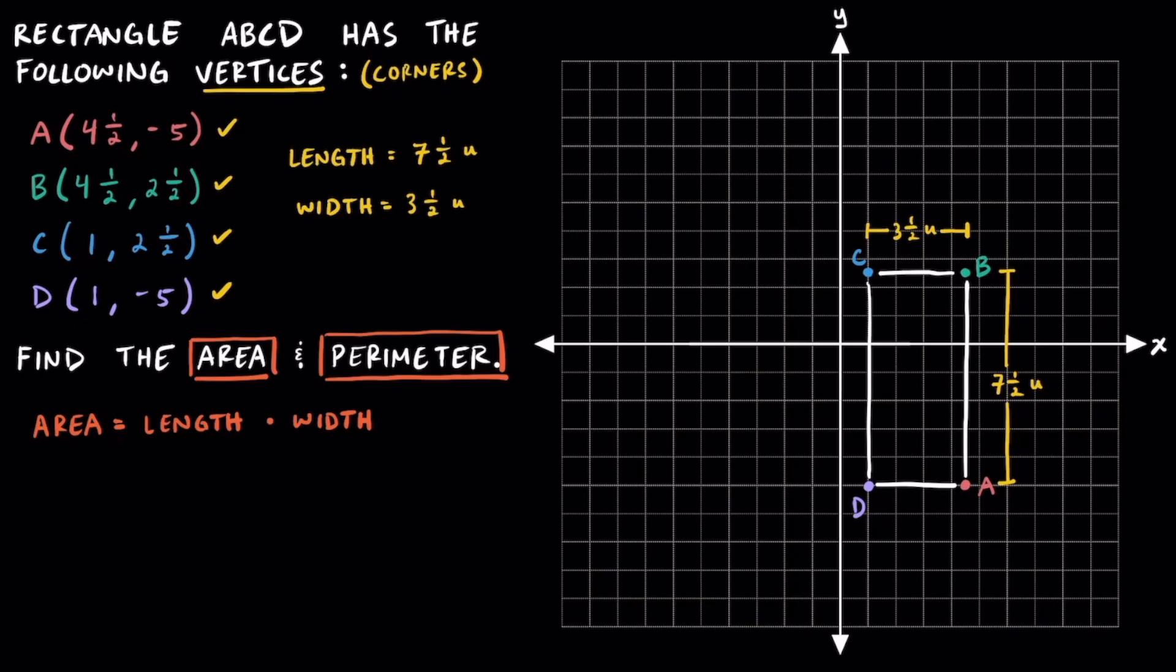Remember for the area of a rectangle, the formula is length times width, so we can go ahead and substitute the length as seven and a half units, and we're going to multiply that by three and a half units. To multiply fractions, we're going to convert these mixed numbers into improper fractions, so we have 15 halves units times seven halves units, and we can't cross-cancel here, so we can just multiply across.